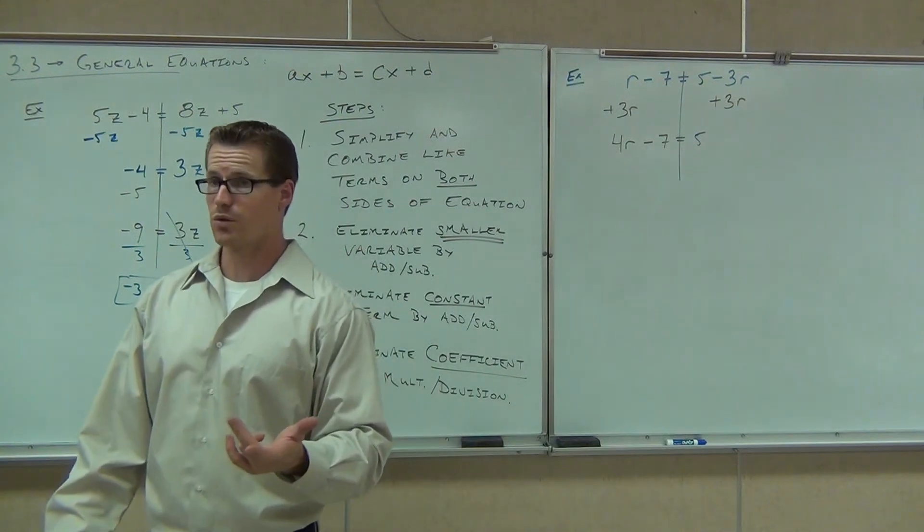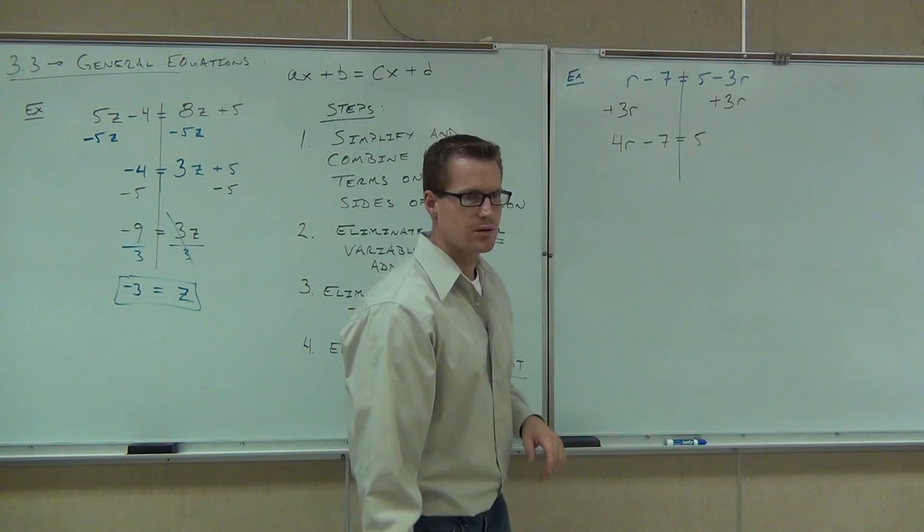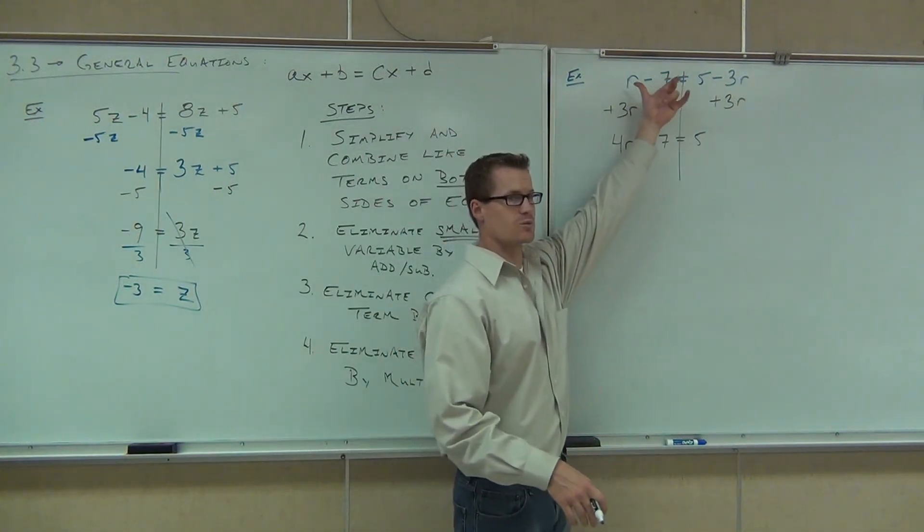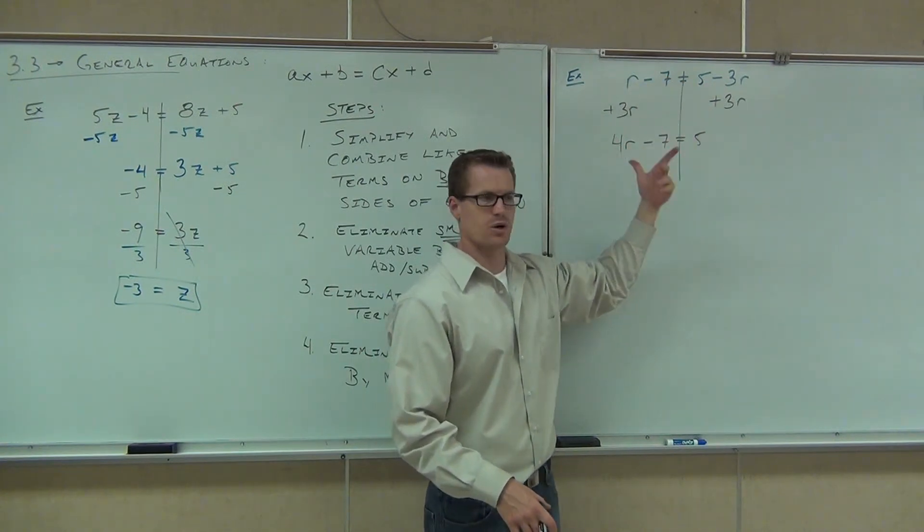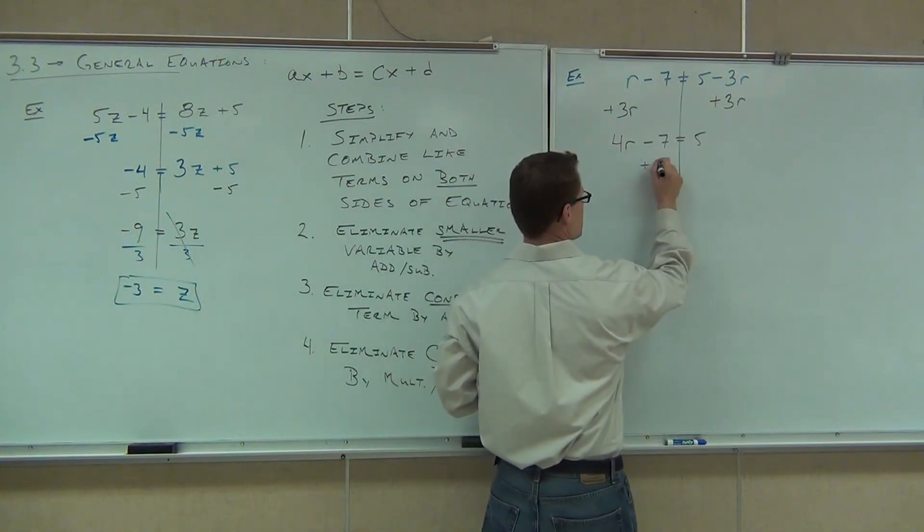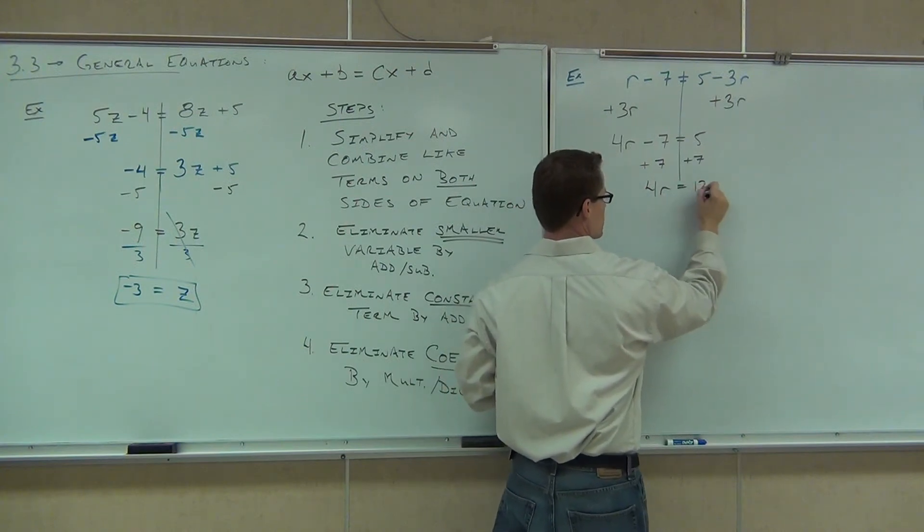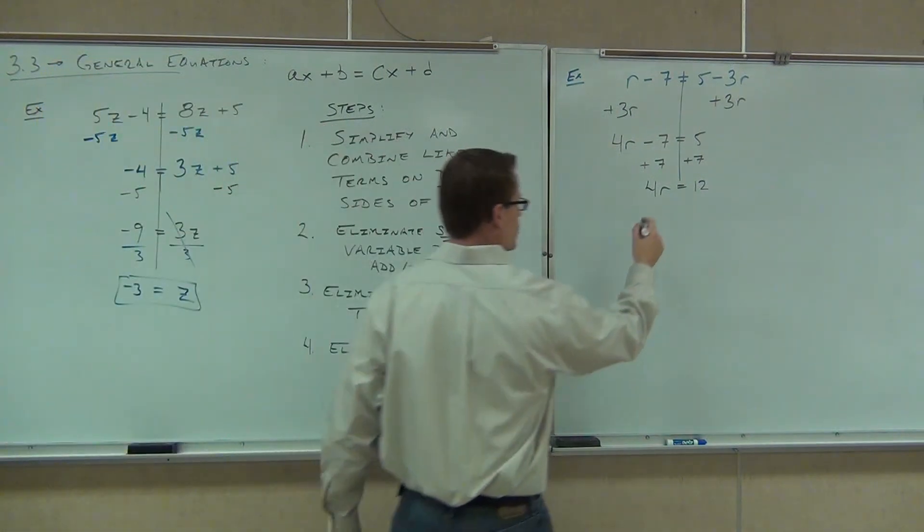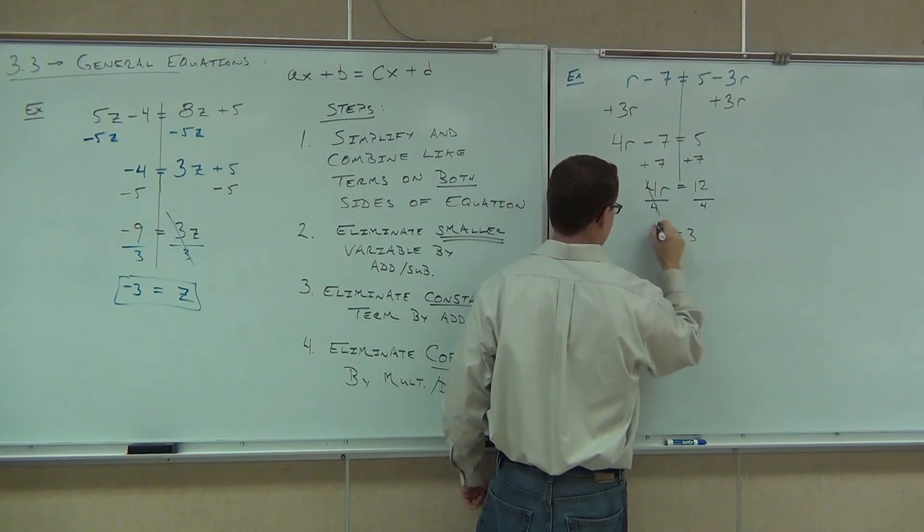We're down to something we can really work with. What number are we going to get rid of next? The 7. Notice how we're not dividing until the very last step. It's just combined like terms, add, subtract, add, subtract, divide. Divide comes last. We're going to add 7 to both sides. 4R equals 12, and our last step is to get rid of that coefficient by division. We're going to divide both sides by 4, so R equals 3.